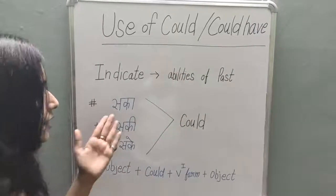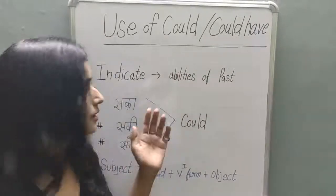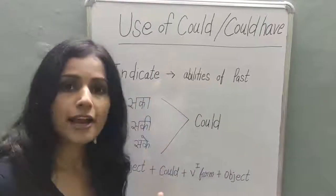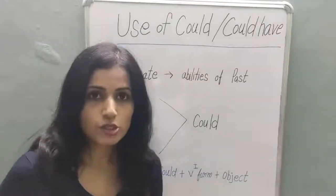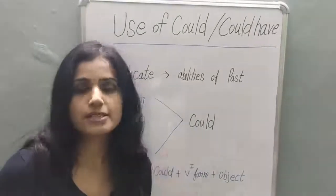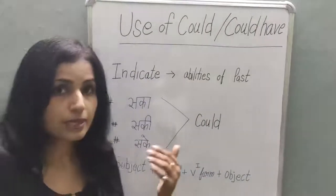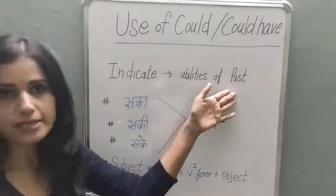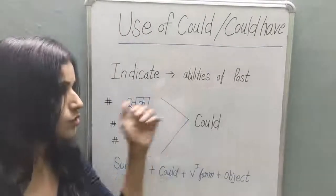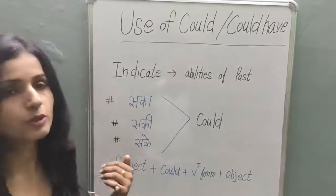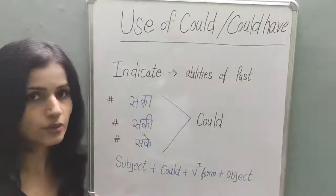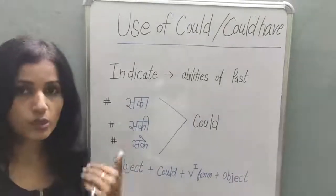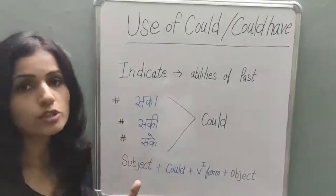What is the indicator of 'could'? You can see here: abilities of the past. 'Can' and 'may' show ability but in the present. But when we create a sentence with 'could', we show past ability — the quality or ability of the subject.